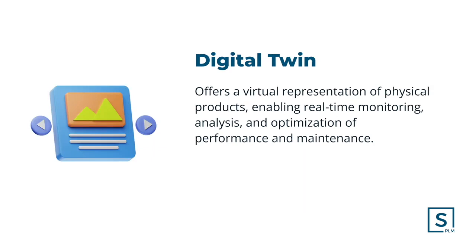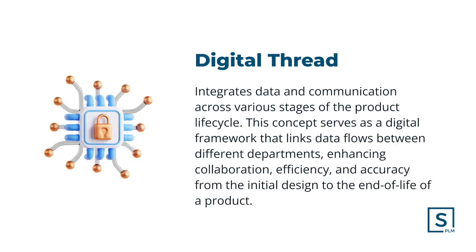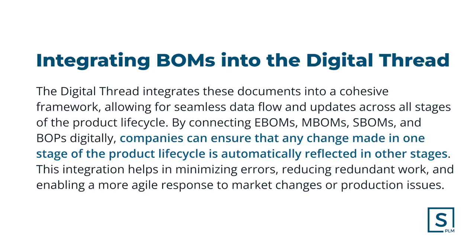Digital Twin. A digital twin offers a virtual representation of physical products, enabling real-time monitoring, analysis, and optimization of performance and maintenance. Digital Thread. The digital thread integrates data and communication across various stages of the product lifecycle. This concept serves as a digital framework that links data flows between different departments, enhancing collaboration, efficiency, and accuracy from the initial design to the end of life of a product. To fully understand the impact of the digital thread, it's essential to explore how different types of bill of materials, or BOMs, play integral roles throughout this process.